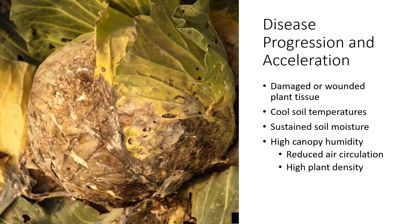Sclerotinia diseases are typically more aggressive during certain field conditions: anytime tissue is damaged or wounded, when soil temperatures are cool — 60 degrees is optimal — when there is sustained soil moisture occurring in wet springtime conditions, and especially in high tunnels when canopy humidity is very high. Reduced air circulation within a canopy, dense plantings, and weeds all contribute. Spacing plants and anything we can do to dry out the canopy will reduce conditions conducive to infection and disease.